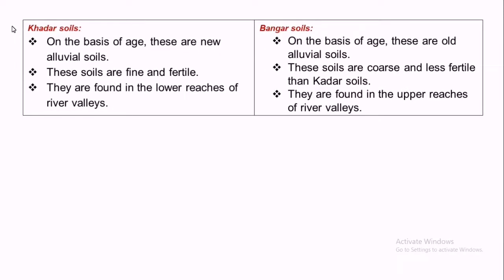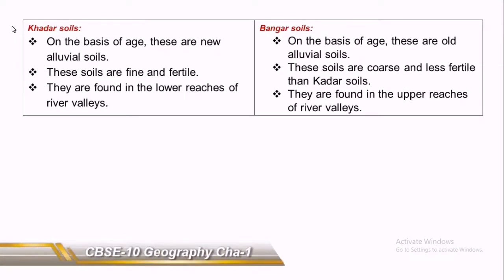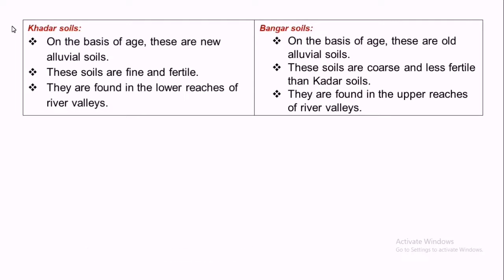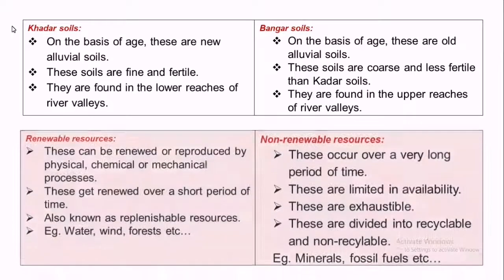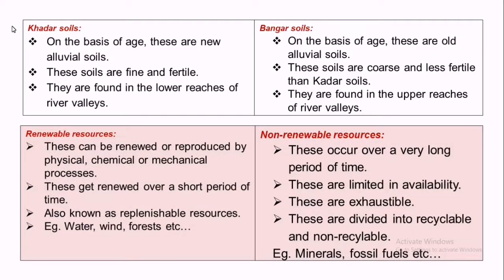Distinguish between khadar soil and bangar soil. Khadar soil: on the basis of age, this is the new alluvial soil; these soils are fine and fertile, found in the lower reaches of river valleys. Bangar soil: on the basis of age, this is the old alluvial soil; these are coarse and less fertile, found in the upper reaches of river valleys.